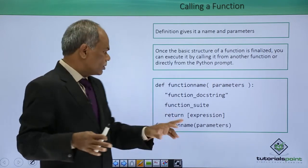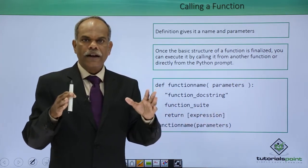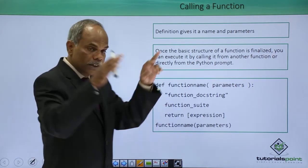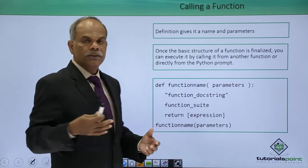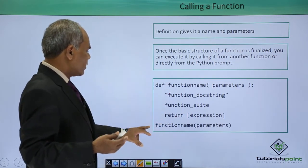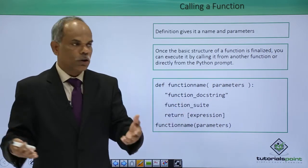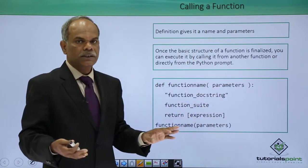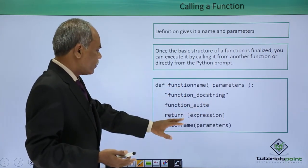The last statement in the block must be return. The square brackets show 'expression'—whenever syntax is represented with square brackets, it means that value is optional. Here also, expression is optional. This is the definition of the function. How do you call it? Use the same name of the function in the calling environment and provide the actual number of parameters that were used in the definition. This is how a function is defined and called.